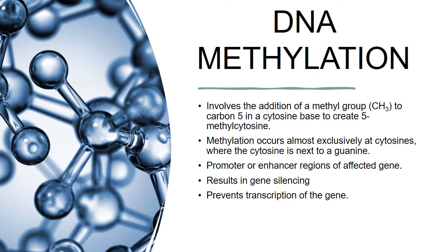DNA methylation involves the addition of a methyl group, CH3, to carbon-5 in a cytosine base to create 5-methyl cytosine. Methylation occurs almost exclusively at cytosines, where the cytosine is next to a guanine. Common sites for DNA methylation include promoter or enhancer regions of the affected gene, and this results in gene silencing, which then prevents transcription of the gene.